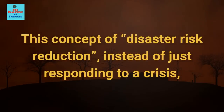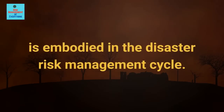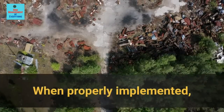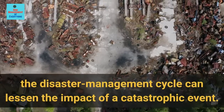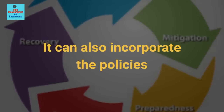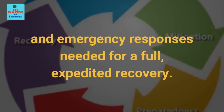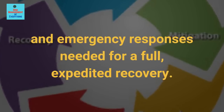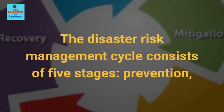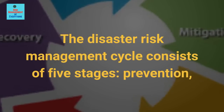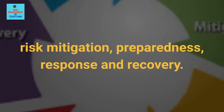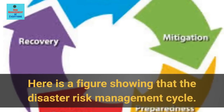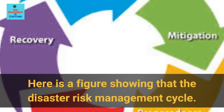This concept of disaster risk reduction, instead of just responding to a crisis, is embodied in the disaster risk management cycle. When properly implemented, the disaster management cycle can lessen the impact of a catastrophic event. It can also incorporate the policies and emergency responses needed for a full, expedited recovery. The disaster risk management cycle consists of five stages: prevention, risk mitigation, preparedness, response and recovery.